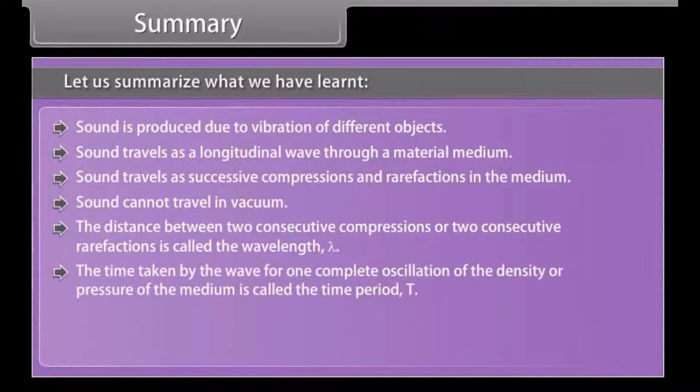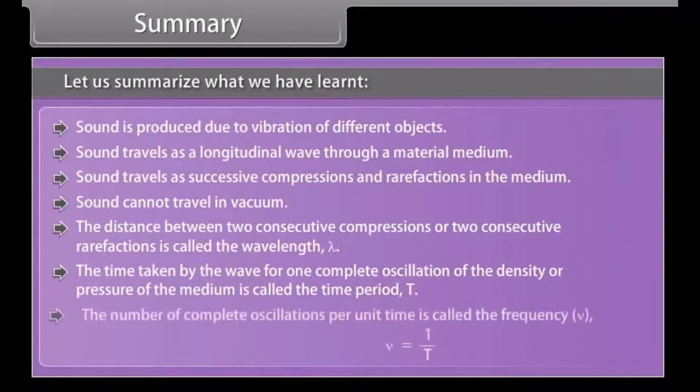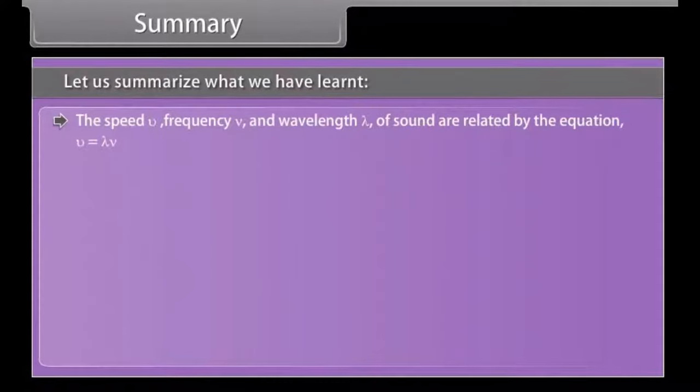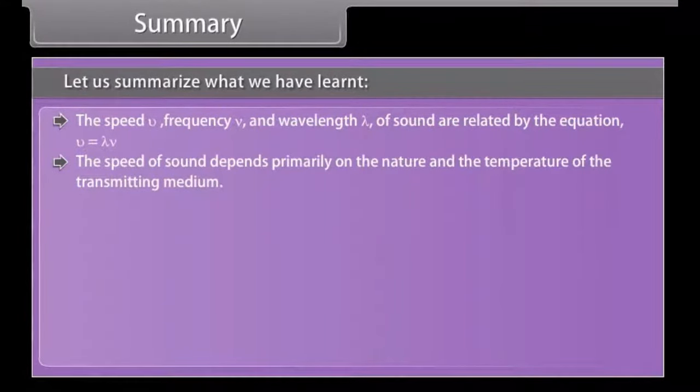The distance between two consecutive compressions or two consecutive rarefactions is called wavelength lambda. The time taken by the wave for one complete oscillation of the density or pressure of the medium is called the time period T. The number of complete oscillations per unit time is called the frequency nu is equal to 1 upon T. The speed v frequency nu and wavelength lambda of sound are related by the equation v is equal to lambda into nu. The speed of sound depends primarily on the nature and the temperature of the transmitting medium.